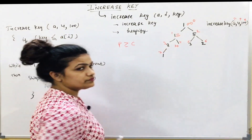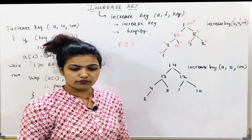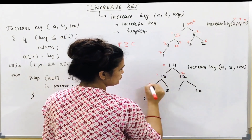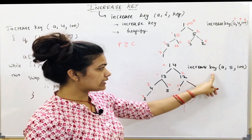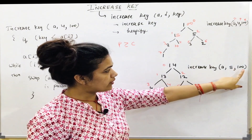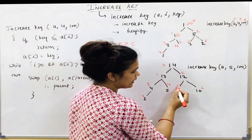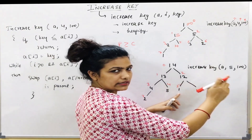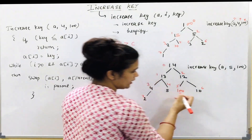Let us see one more example. Index positions are labeled 0 through 7. Given: increase key array A, index position 5, key value 100. We go to the 5th index position and replace its current value with 100.